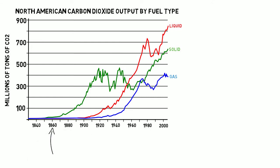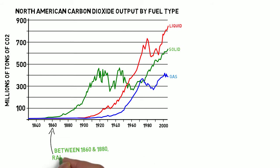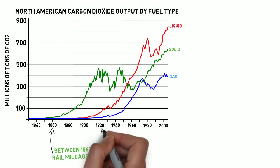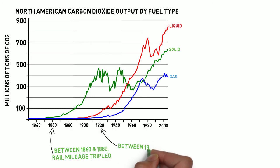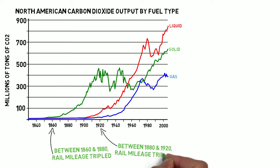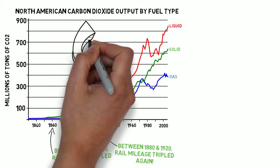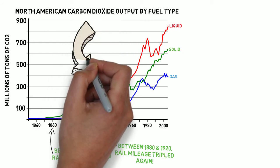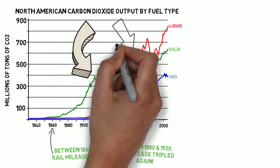So I'm going to start here — let me choose railroads. Railroads are cool. Big steam engines. Between 1860 and 1880, railroad mileage in the United States tripled. That's amazing to think about. During the Civil War and afterwards, we're building railroads all over the place. And then between 1880 and 1920, railroad mileage tripled again. We've got railroads crisscrossing every corner of the nation. And look at that spike — that spike in solid fuels, the carbon dioxide made by solid fuels. That's all that coal burning in those steam engines.